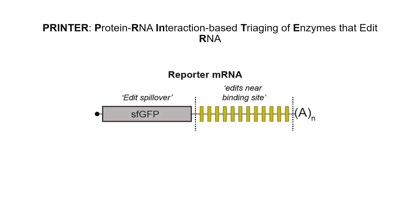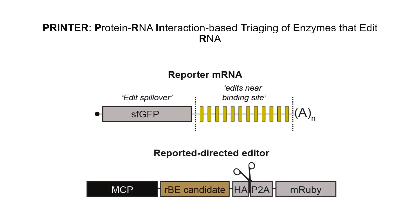The first component in the system is a reporter mRNA that includes the GFP coding sequence alongside a synthetic 3' untranslated region, or UTR. This 3' UTR is enriched with 12 MS2 hairpins. The hairpins are high-affinity binding sites for the MS2 coat protein, or MCP, which is an RNA binding domain. The second component is a chimeric protein combining an MCP domain with an RBE domain. This design allows the RBE domain to catalyze the deamination of RNA bases within proximity of the MS2 hairpins on the reporter mRNA.